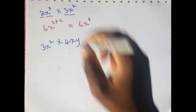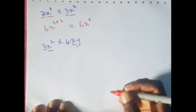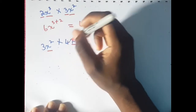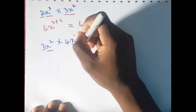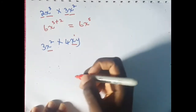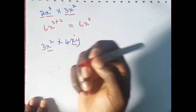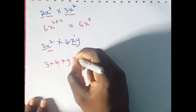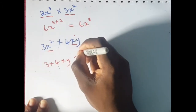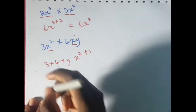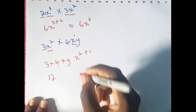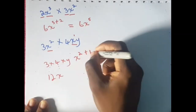For 3x squared times 4xy: the x's share the same base, and there is an imaginary one as the power for this x. The 3 and the 4 are coefficients, and in this case y is treated as a coefficient of the base. So we multiply the coefficients: 3 times 4 times y. Then we write back the base x and add the powers: 2 plus 1. Our final answer would be 12y — since 3 times 4 is 12 — then x raised to the power of 3, giving us 12yx cubed.